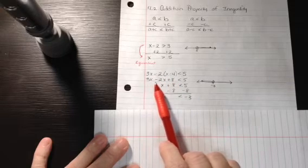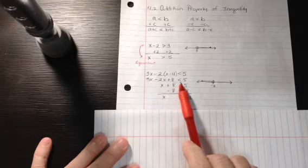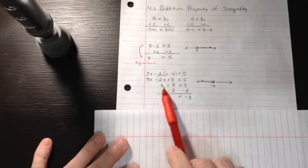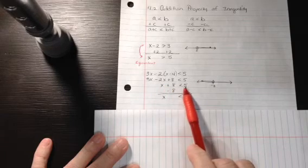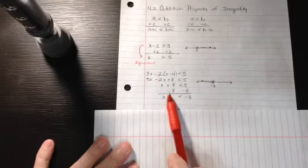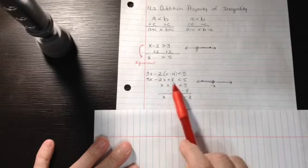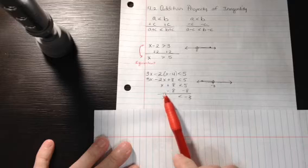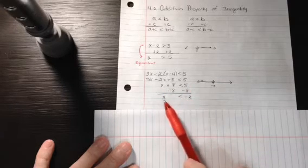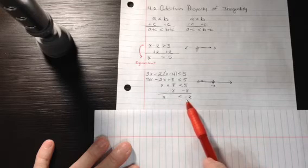So then we have 3x minus 2x plus 8 is less than 5. And we're going to simplify this side. 3x minus 2x is 1x plus 8 is less than 5. Now I'm going to subtract 8 from each side to make this cancel so that I have x left over here. 5 minus 8 on the right side is negative 3. So we have x is less than negative 3.